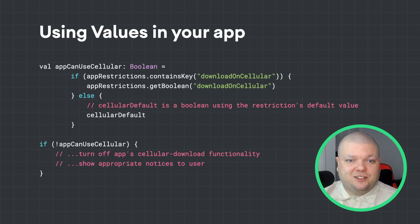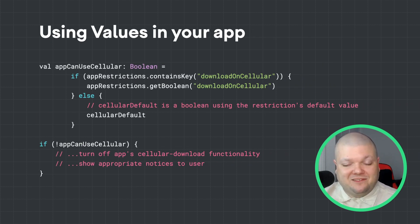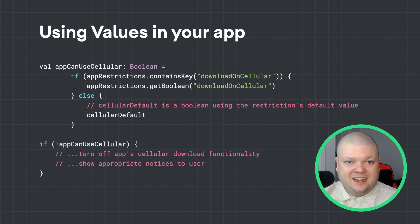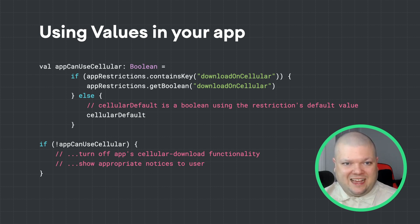Your app should now take the appropriate action or behavior based on those configuration values. For example, this app is checking to see if the download on cellular configuration was set to true — if so, it should turn off any cellular download in the app.